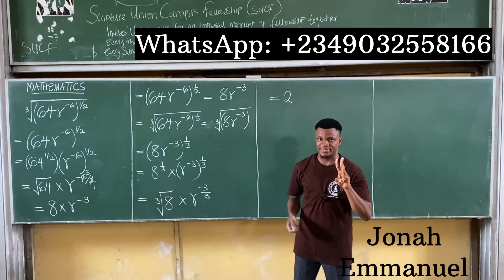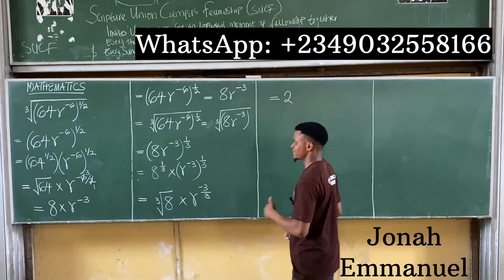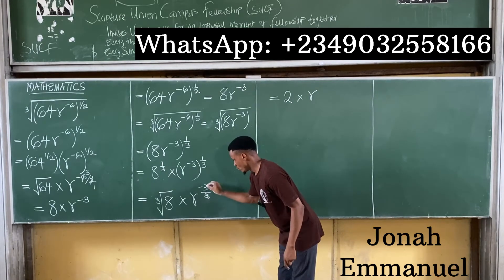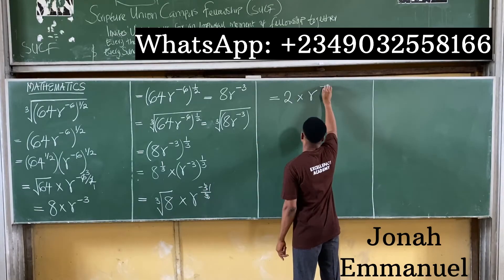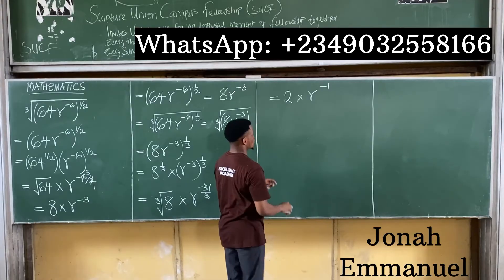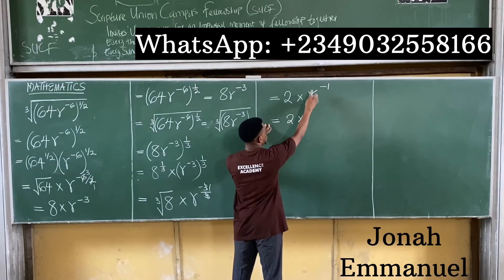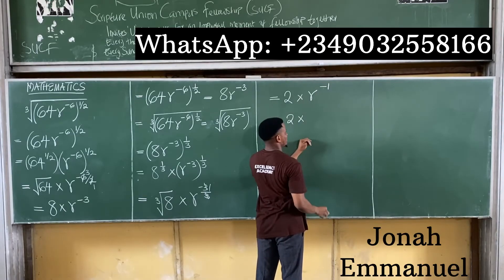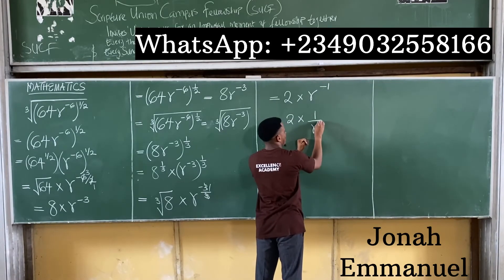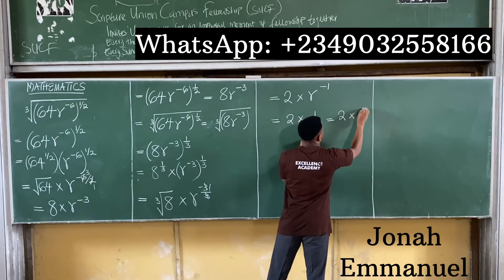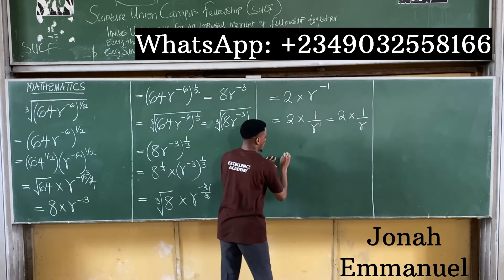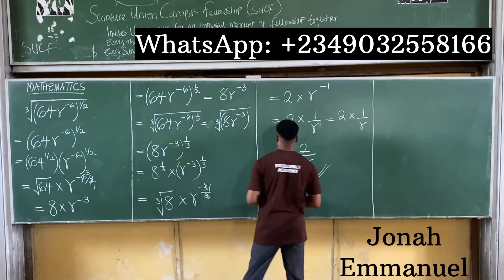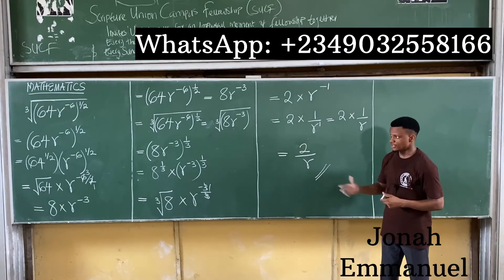The cube root of 8 is 2, because 2 times 2 times 2 equals 8. And negative 3 over 3 simplifies to negative 1, giving r to power negative 1. Applying the negative index law, r to power negative 1 becomes 1 over r. So the final answer is 2 times 1 over r, which equals 2 over r.